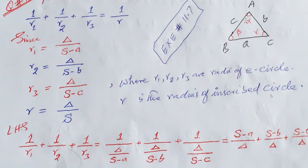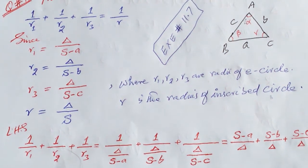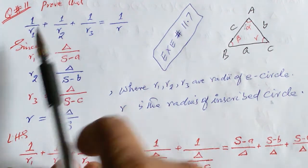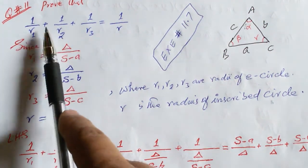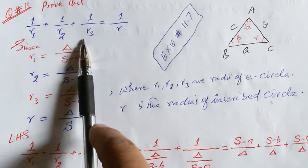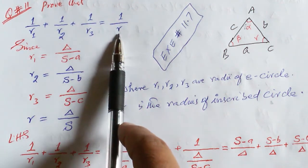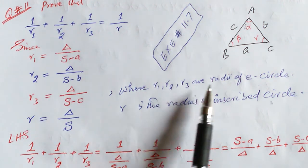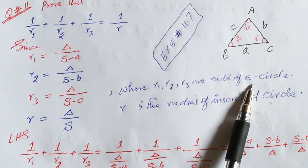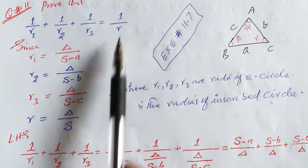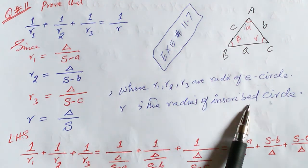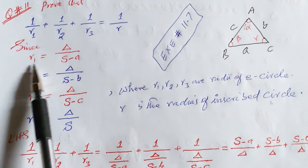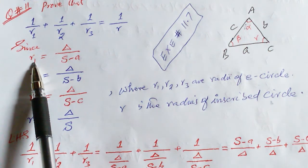Question 11: Prove that 1/r1 plus 1/r2 plus 1/r3 is equal to 1/r, where r1, r2, r3 are the radii of the excircles and r is the radius of the inscribed circle.